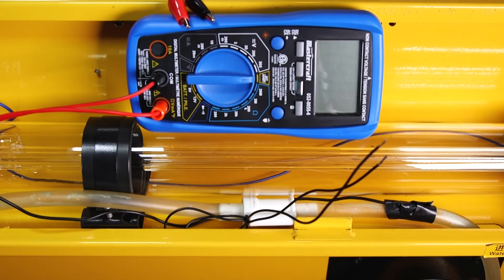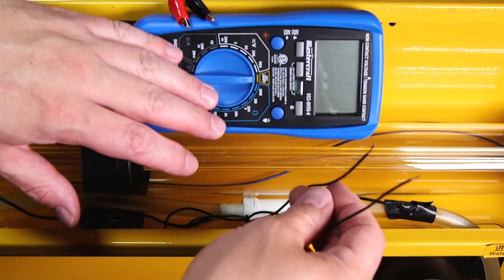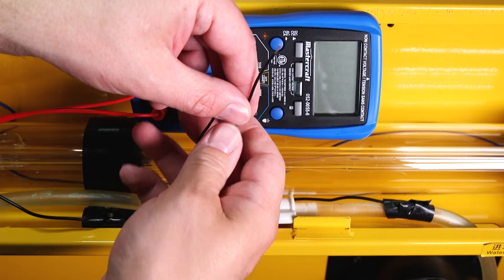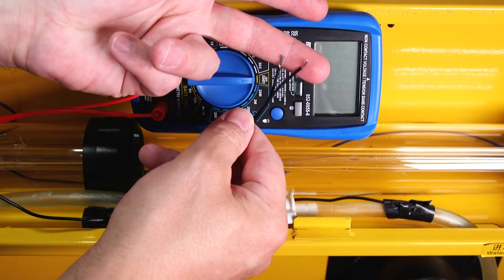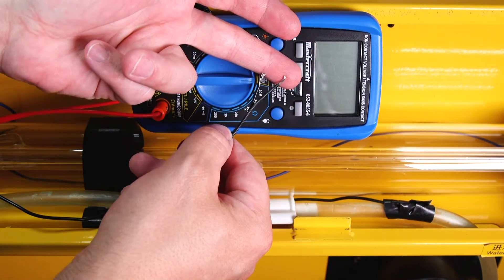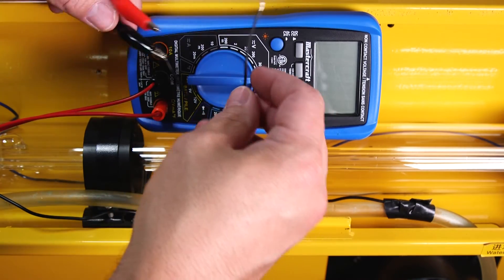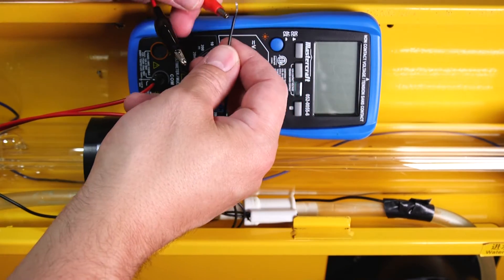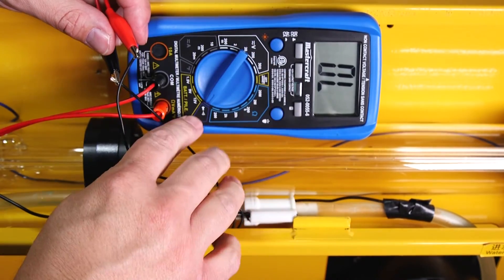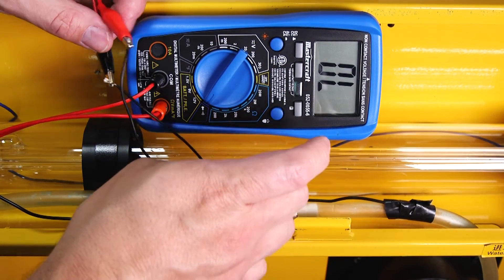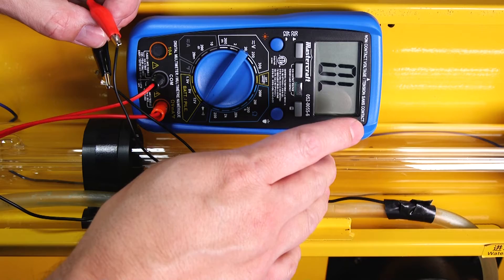To test if your water flow switch has indeed failed, you want to cut the two wires coming off your water flow switch and strip back their ends so you can attach a multimeter. After you have attached your multimeter ends to your water flow switch, turn your multimeter to the continuity check. You can then turn on your water pump.